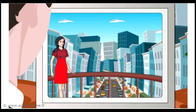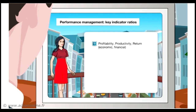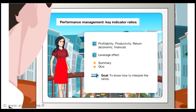This module is made of two chapters. In the first one we will study the notions of profitability, productivity and return, return on capital employed and return on equity. Whereas the second chapter will focus on the leverage effect. At the end of this module a summary will be presented, as well as many quizzes to let you test your knowledge. The goal of this module is to know how to interpret those different ratios.